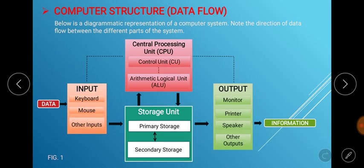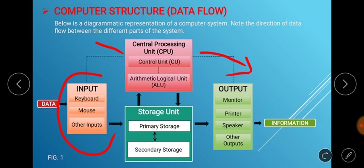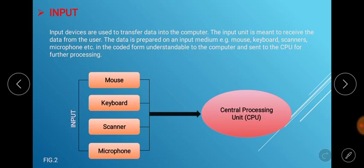For the computer structure, I want us to pay close attention to the direction of data flow between the different parts of the system. Data is entered into the system through the input medium, directly onto the CPU or to storage where the CPU fetches it for processing, and it is represented as information through the output medium — our monitors, speakers, and other output devices.